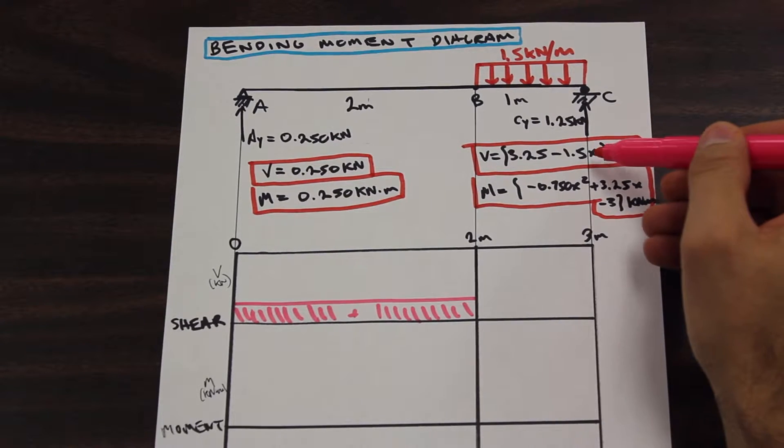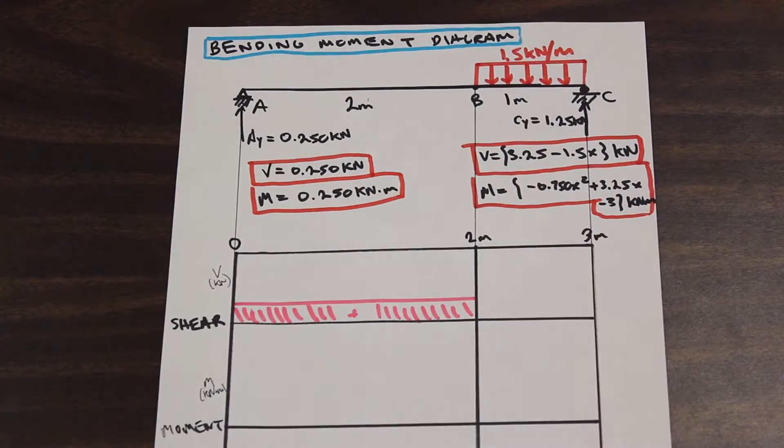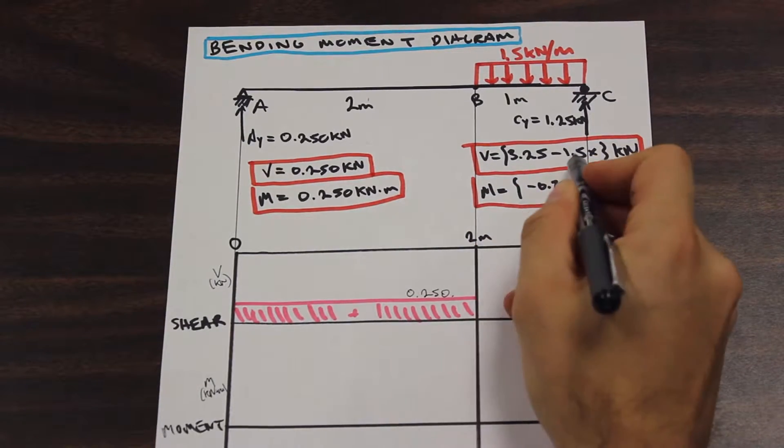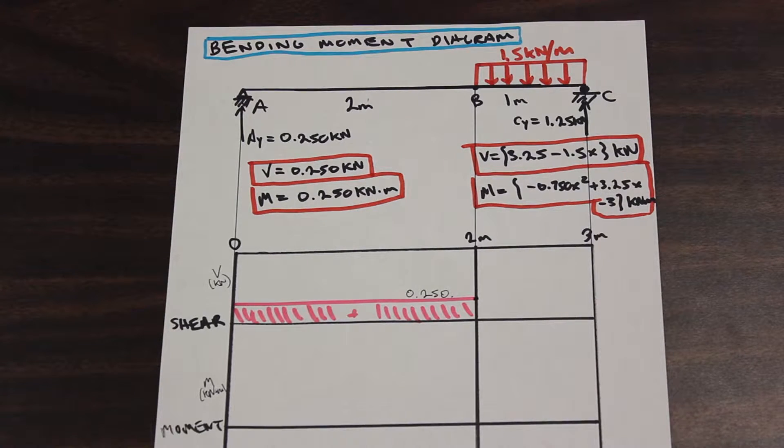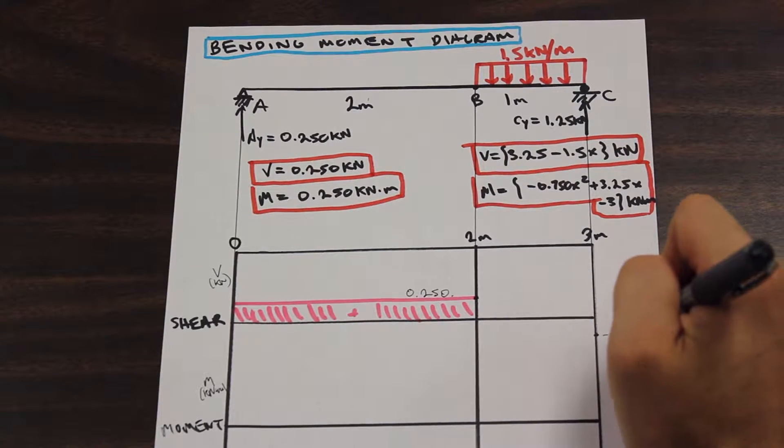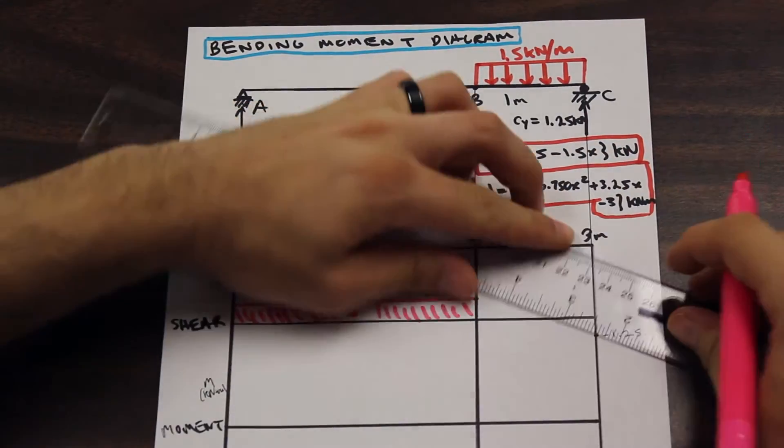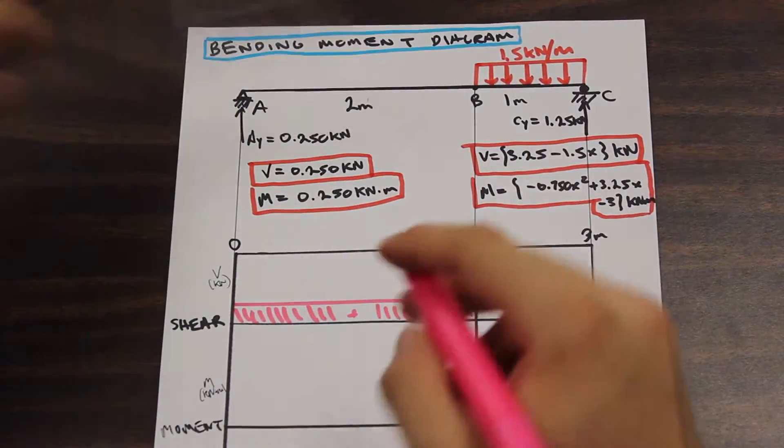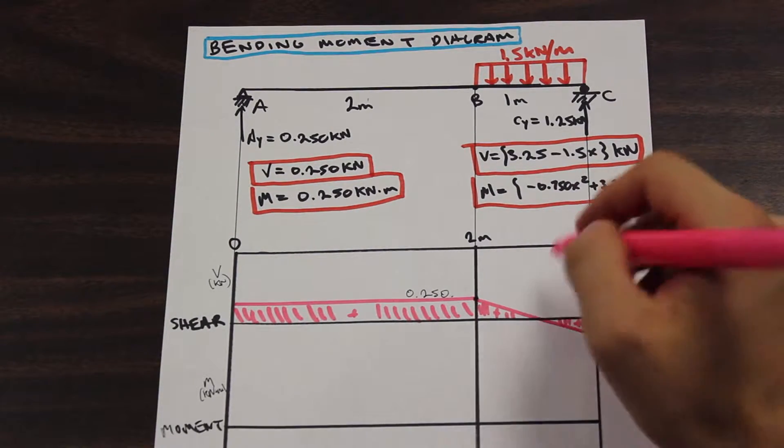So what's our first point? Well, if we go ahead and we sub in two here, we should get, and let me just write this here for you, this is 0.250. We should get 0.250. Go ahead and plug in two for x. Now, if we plug in three for x, we should end up getting negative 1.25 kilonewtons. Now, we have these two points, and all we're going to do is go ahead and connect them, and that's as easy as that. That's our first section of the beam. For our shear force. Now, sorry, that's supposed to be a negative.